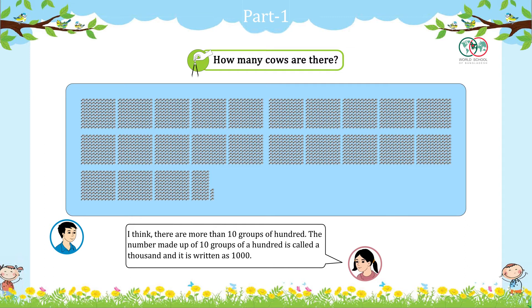The number made up of 10 groups of 100 is called a thousand, and it is written as 1,000 (one zero zero zero).